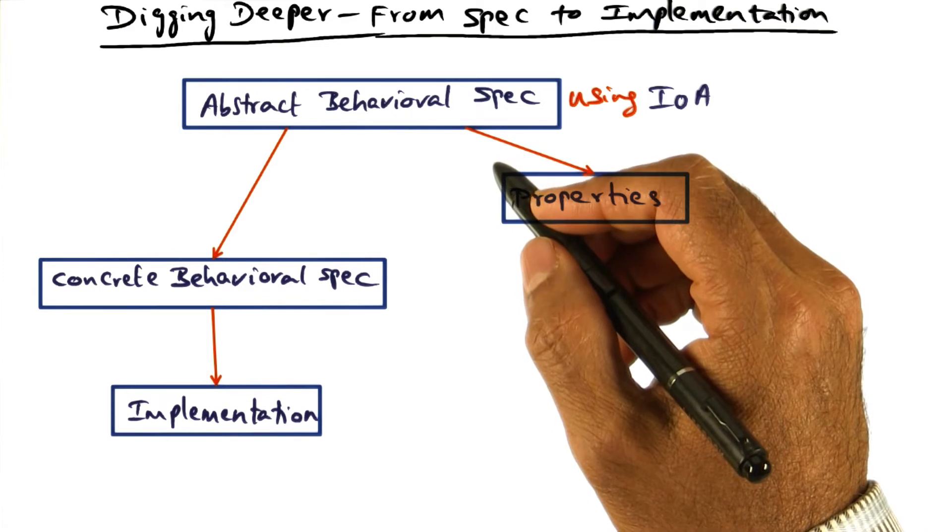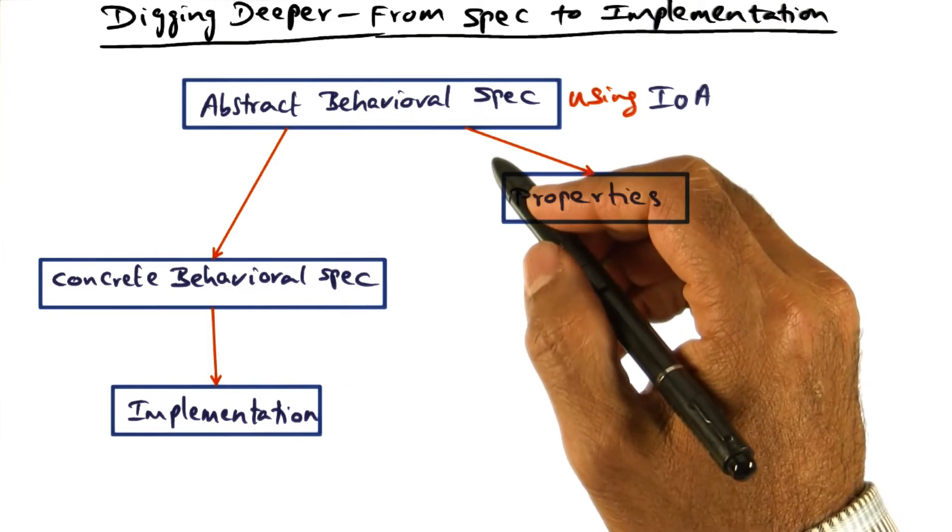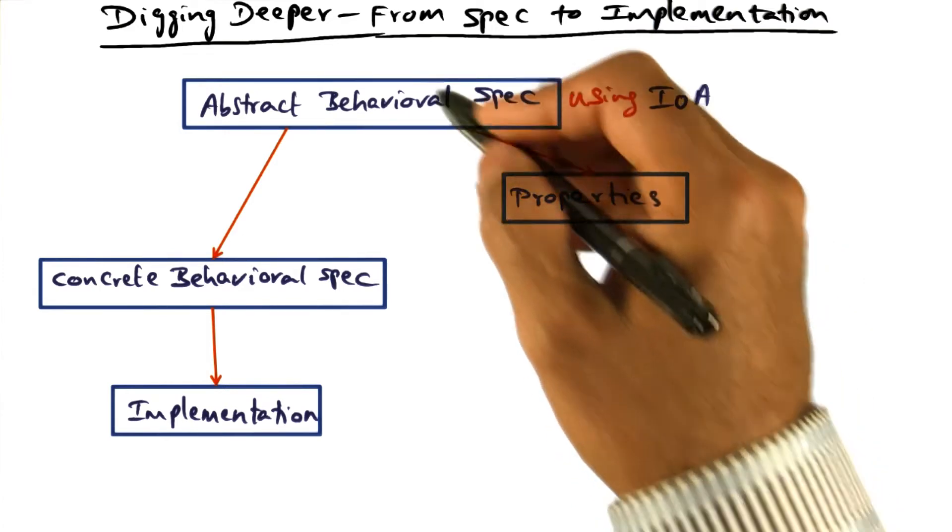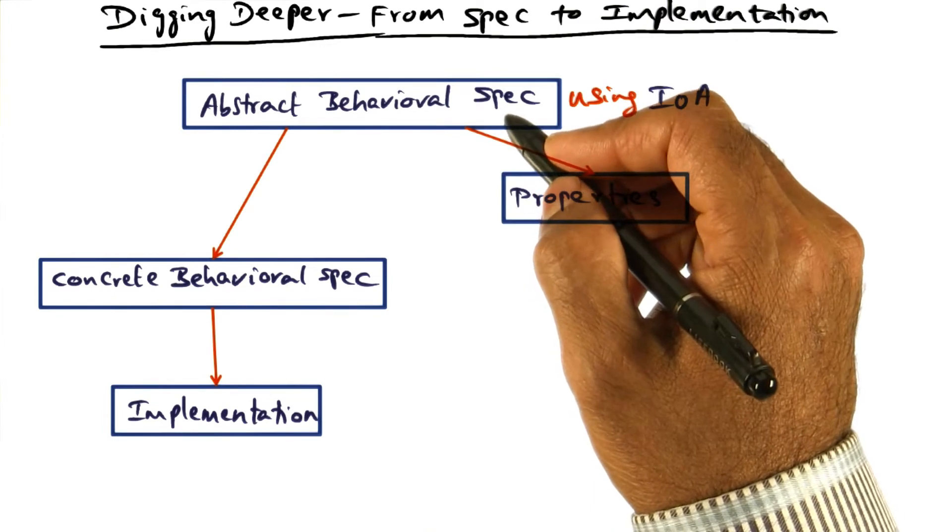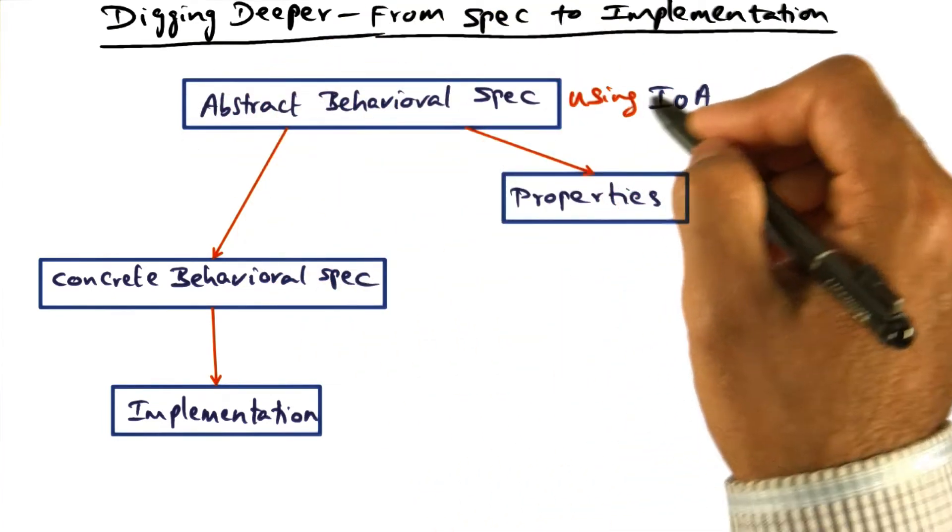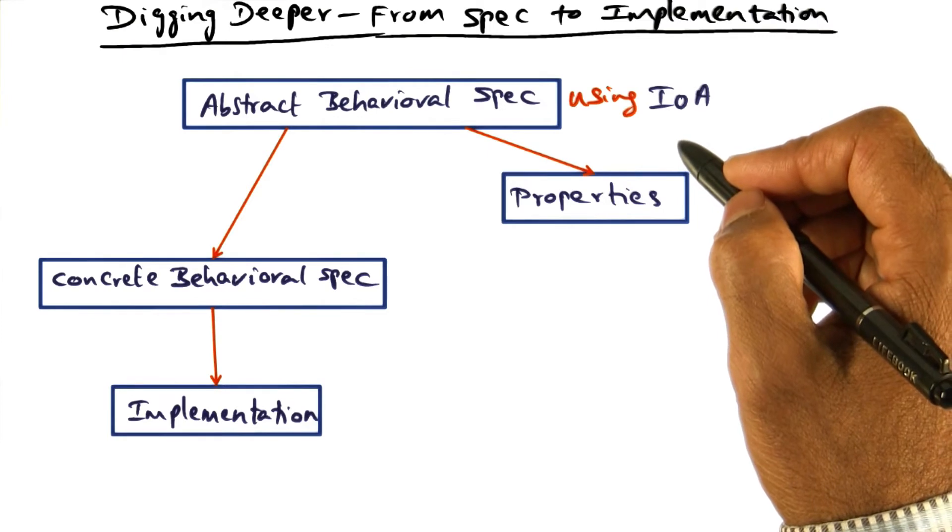For example, in the protocol, if we desire that the packet should be delivered in order, that's a property that we want for that subsystem. Those are the behavioral properties that you can express using IO automata.